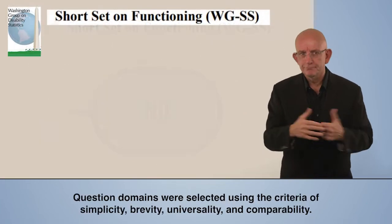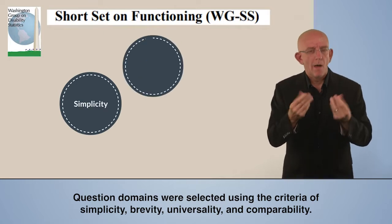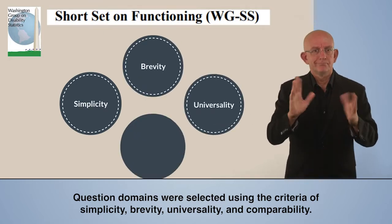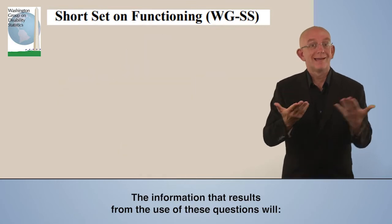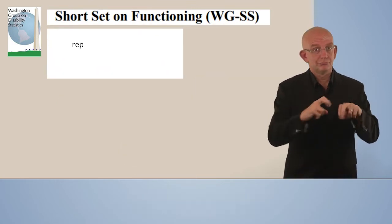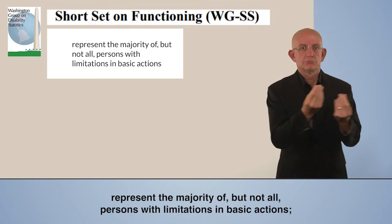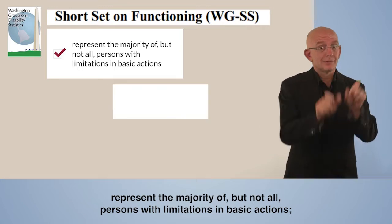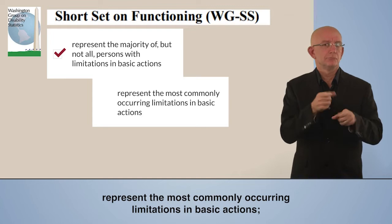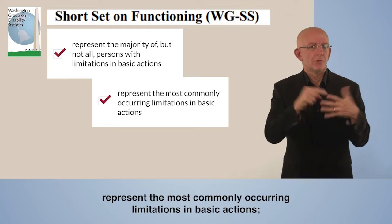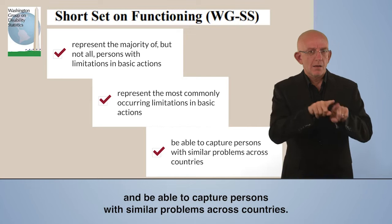Question domains were selected using the criteria of simplicity, brevity, universality, and comparability. The information that results from the use of these questions will represent the majority of, but not all, persons with limitations in basic actions; represent the most commonly occurring limitations in basic actions; and be able to capture persons with similar problems across countries.